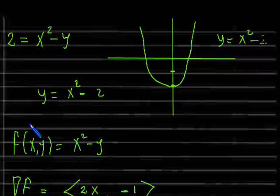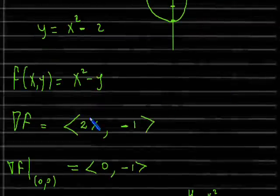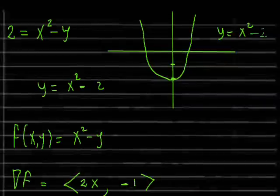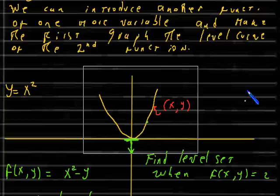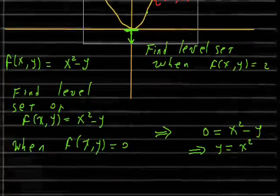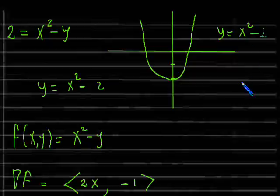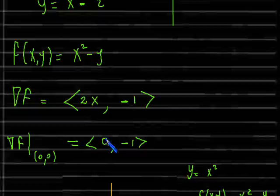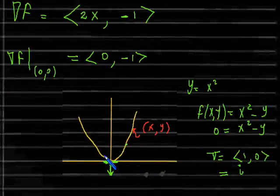Let me compute the gradient of the function f(x, y) = x² − y. The gradient is just the partial of f with respect to x, which is 2x, and the partial of f with respect to y, which is −1. I'm going to take the point (0, 0), which is on this graph — it's the level curve when f(x, y) = 0. Evaluating the gradient at (0, 0), I end up with (0, −1).